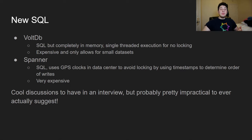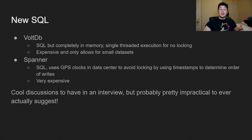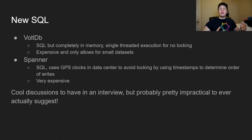The issue with VoltDB is that it's expensive and only good for small datasets since it runs in memory. Next is Spanner, a Google product. It's SQL, but to avoid heavy locking it puts GPS clocks in the actual data center to assign each write a highly accurate timestamp, then uses those timestamps to order writes across replicas. Once all writes are ordered, databases can reach a consistent state — achieving strong consistency via linearizability. Spanner is also very expensive since it requires non-commodity hardware in the data center.